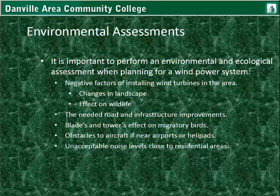They also need to consider how the blade and the height of the tower may affect migratory birds. If it's a large migratory path, it's not a good idea to put wind turbines there. Also, they act as obstacles to aircraft when near airports and helipads, and if it's part of a flight path, FAA regulations have to be considered, such as the blinking lights on top and other rules and regulations.